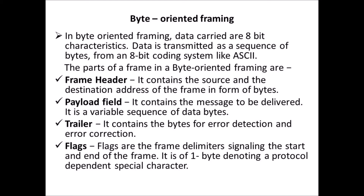The parts of a frame in byte-oriented framing are: frame header, payload fill, trailer, and flags. The first part is the frame header. It contains the source and the destination address of the frame in the form of bytes. The second part is payload fill. It contains the message to be delivered. It is a variable sequence of data bytes.